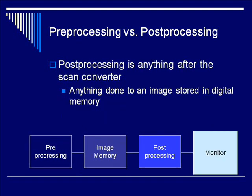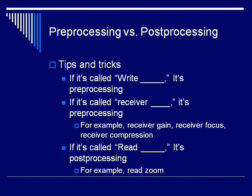Post-processing is anything that happens after we're done with the scan converter — we've stored an image in memory and now we're manipulating it. This is a confusing area, so here are some tips: if something is called 'write anything,' it's pre-processing, because 'write' means writing into memory. If it's called 'receiver anything' — receiver gain, receiver focus, receiver compression — it's pre-processing, as these happen before the image is written to memory. In contrast, if something is called 'read anything,' it's post-processing.